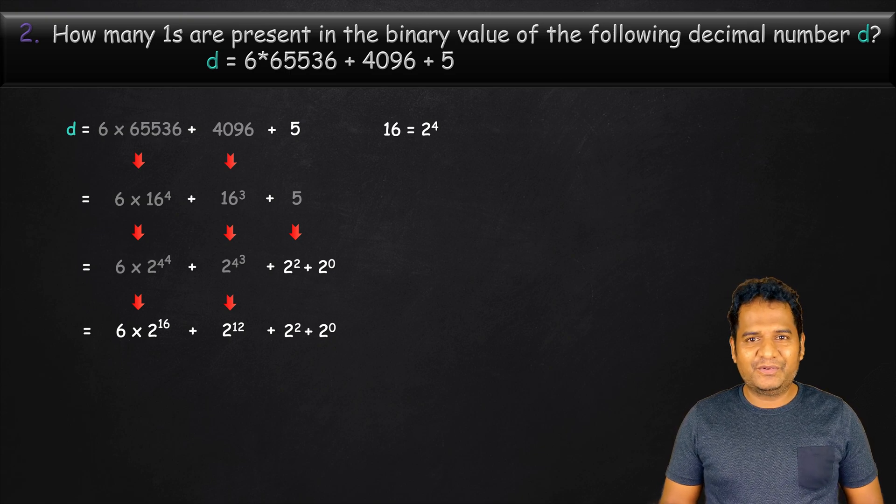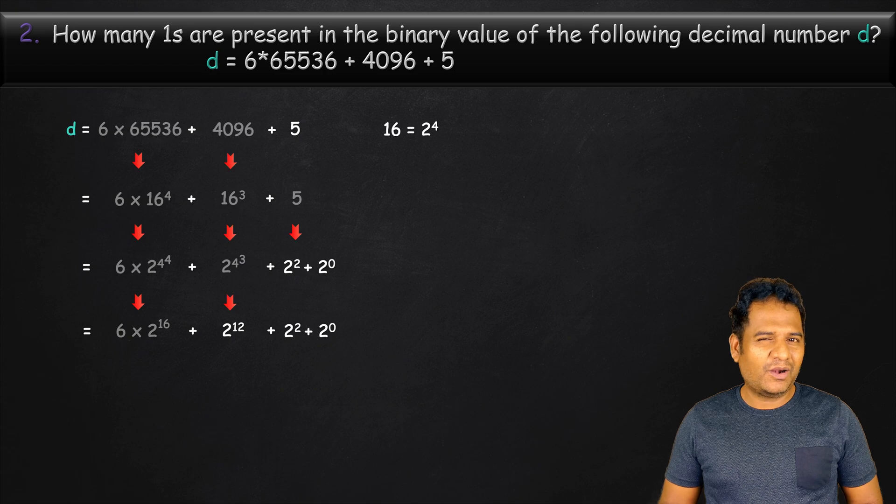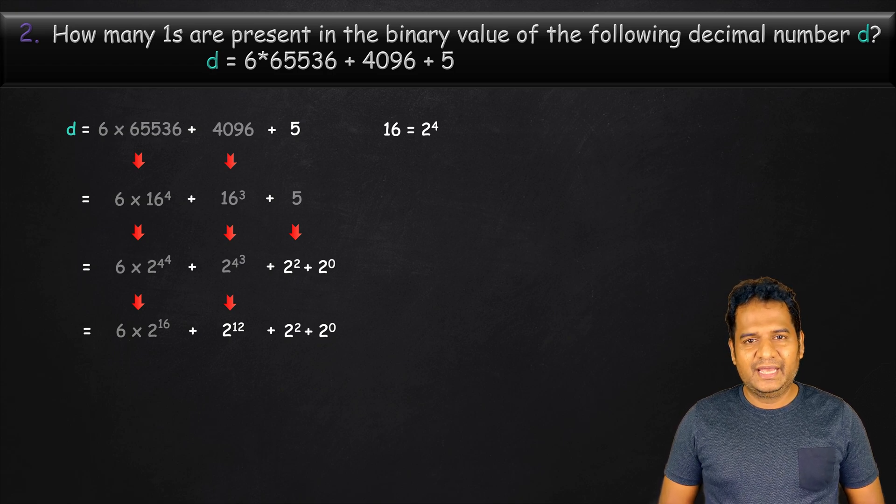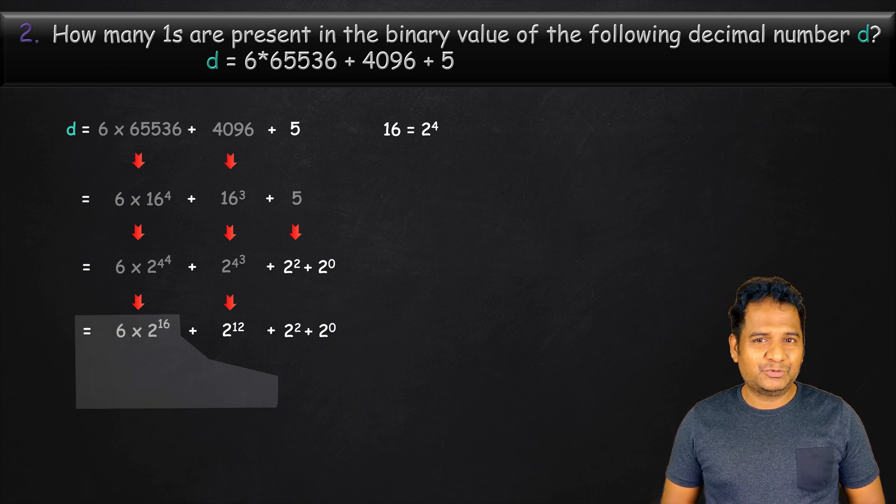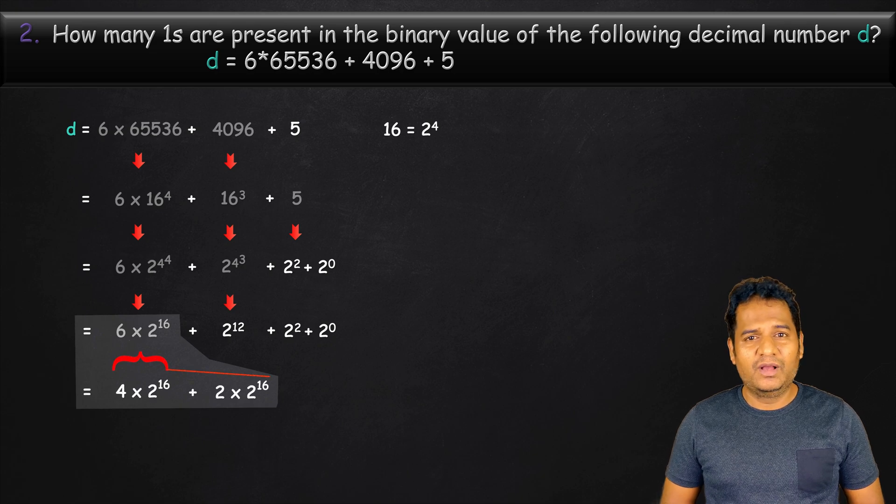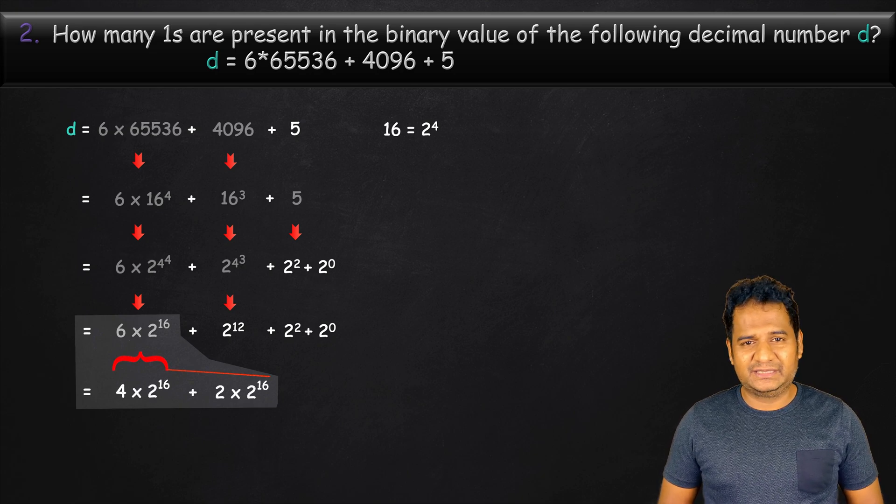But the coefficient of 2 power 16 is 6, but we want all coefficients to be 1. Hence, we can split 6 times 2 power 16 as the sum of 4 times 2 power 16 and 2 times 2 power 16.